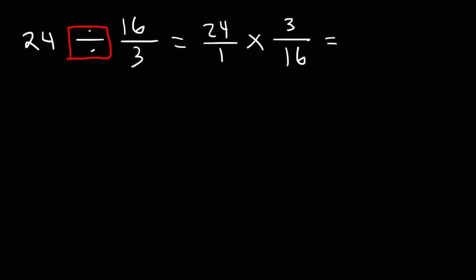Now, before we multiply across, we want to simplify because 24 times 3 will give us a big number. 24, we can write that as 8 times 3. 8 times 3 is 24.